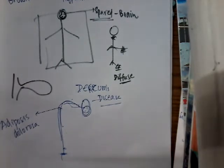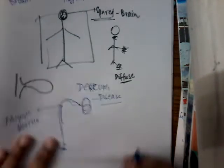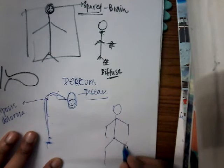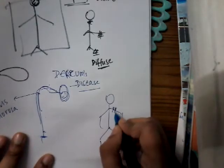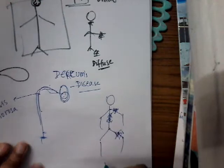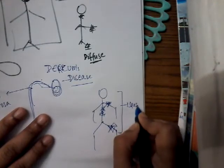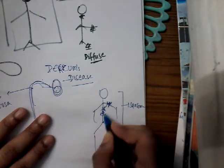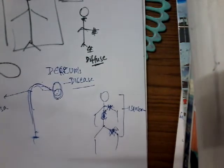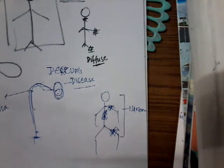Sometimes lipoma in the thighs, shoulders, or back can turn itself into sarcoma. So in the thighs, back, and shoulder, lipoma can transform into sarcoma.